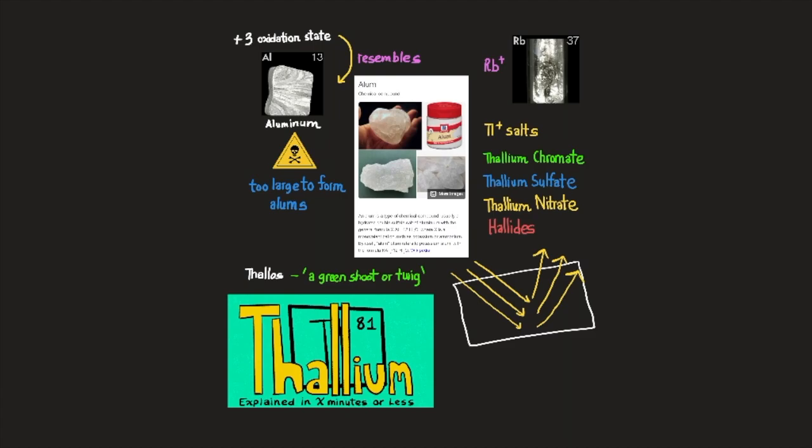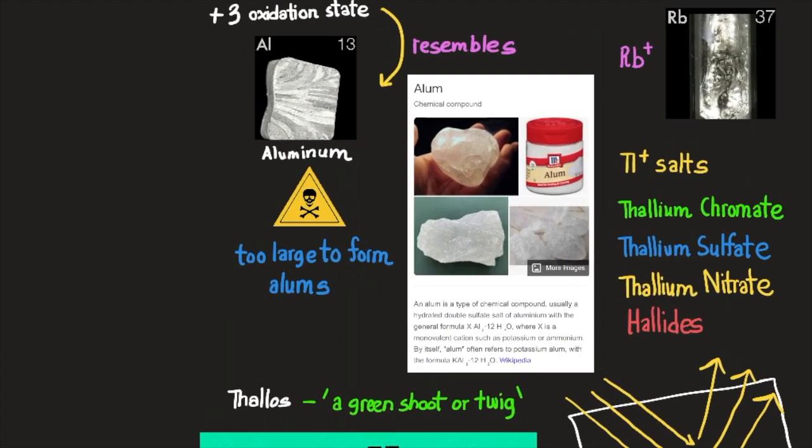In its oxidation state of plus three, thallium resembles aluminum, although the ion, TL3+, appears to be too large to form alums. An alum is a type of chemical compound, usually a hydrated double sulfate salt of aluminum, with the general formula XAL2-12H2O, where X is a monovalent cation such as potassium or ammonium.